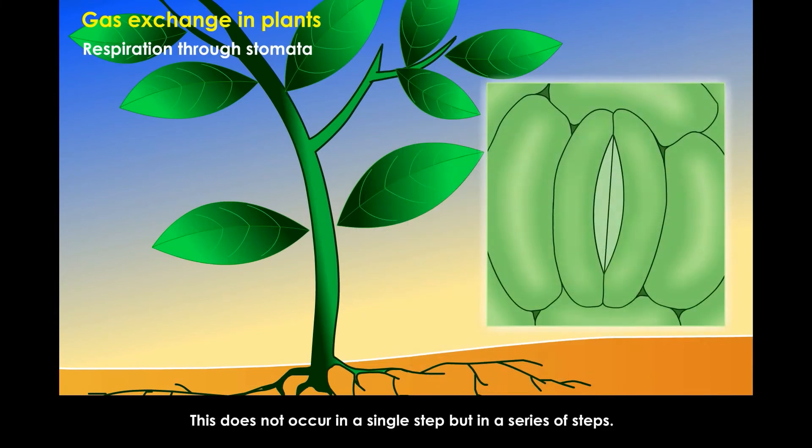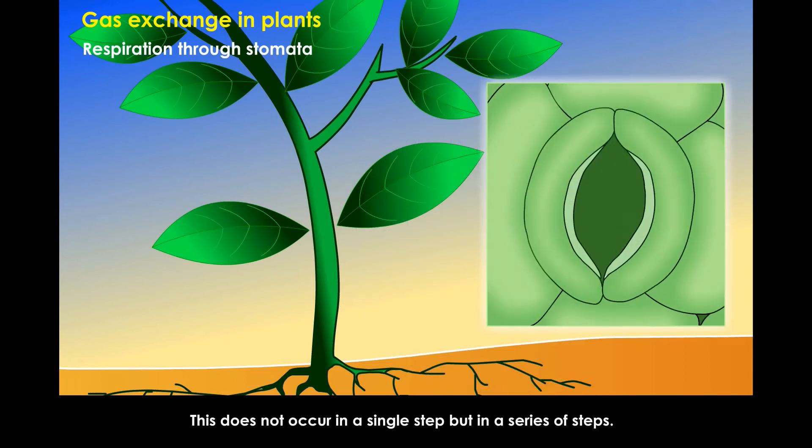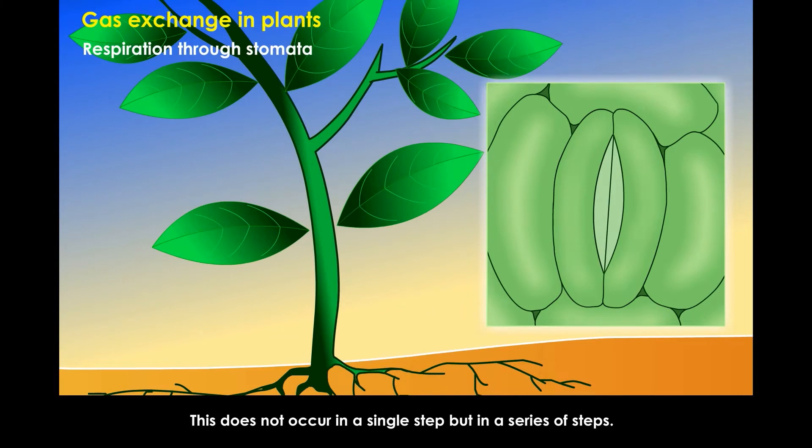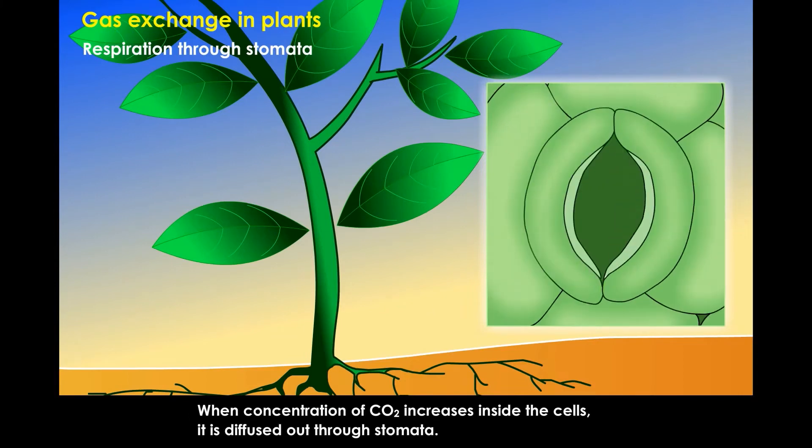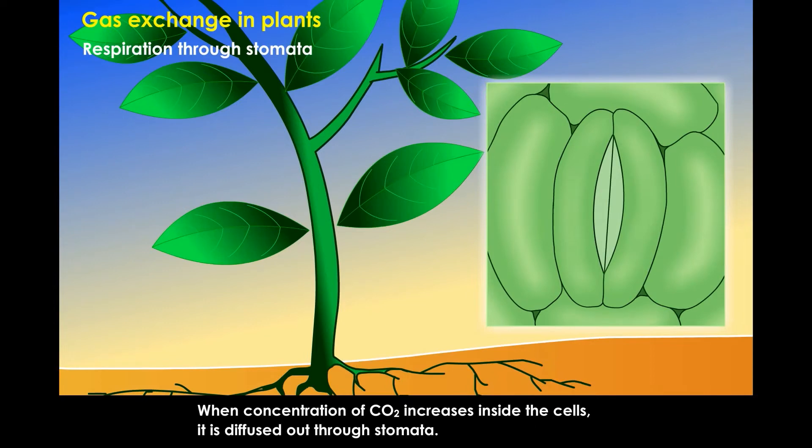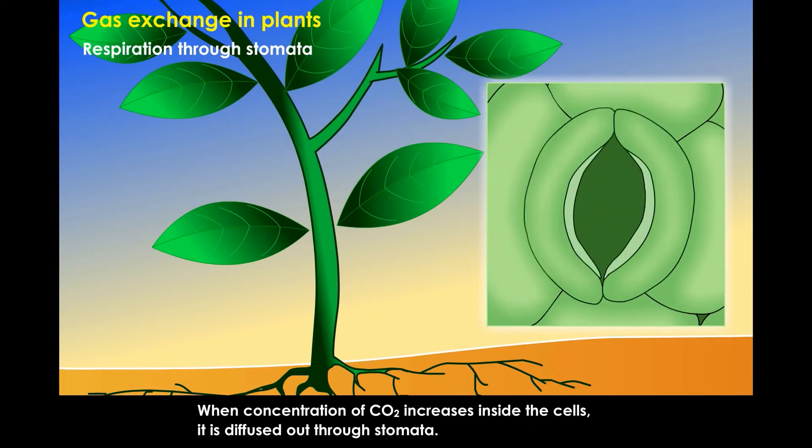This does not occur in a single step, but in a series of steps. When the concentration of carbon dioxide increases inside the cells, it is diffused out through stomata.